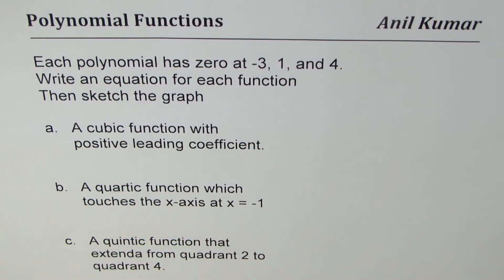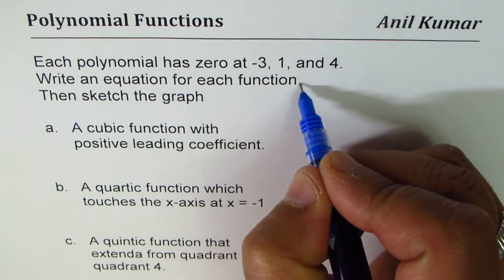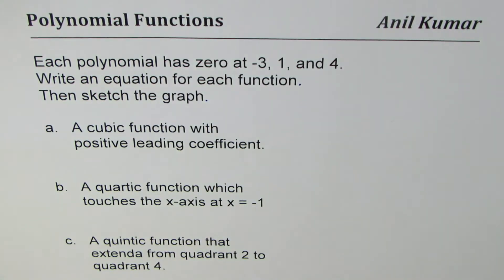I'm Madhul Kumar and here is a very interesting knowledge-based question on polynomial functions. The question is: each polynomial has zeros at minus 3, 1, and 4. Write an equation for each function, then sketch the graph. So we have these three examples where zeros are at minus 3, 1, and 4. We need to write an equation for each function and then sketch a graph.